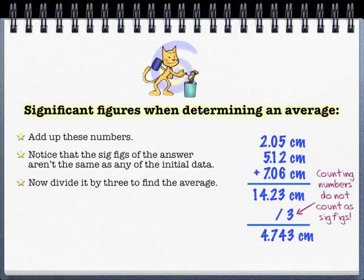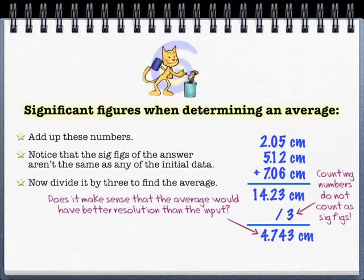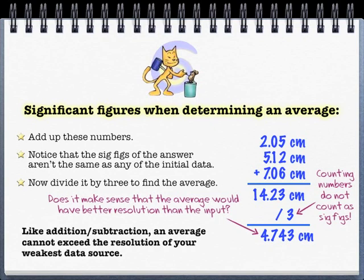I end up with 4.743. It doesn't make any sense that the resolution or the precision of my answer is going to exceed the equipment that the measurements were taken on. Obviously that doesn't make sense, so you do the same thing you did for addition-subtraction. Draw your line and round it. Three rounds down, so my answer would be 4.74.